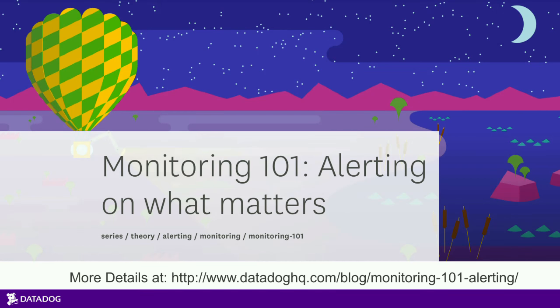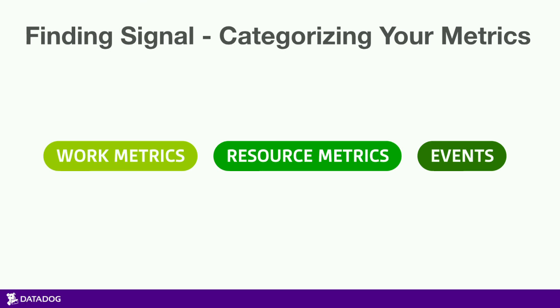So we came up with a guide called Monitoring 101. This is the TLDR edition, but the longer version is on our website and applies regardless of what monitoring tool you happen to use. We encourage you to break down your metrics into three categories: work metrics, resource metrics, and events.